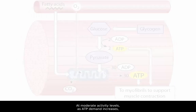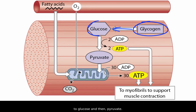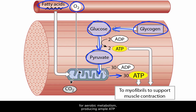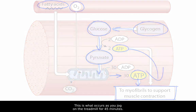At moderate activity levels, as ATP demand increases, stored glycogen is converted back to glucose and then pyruvate. The pyruvate enters the mitochondria, where it undergoes aerobic metabolism, generating ATP. Oxygen and fatty acid levels are sufficient for aerobic metabolism, producing ample ATP to meet demand for muscle contraction. This is what occurs as you jog on the treadmill for 45 minutes.